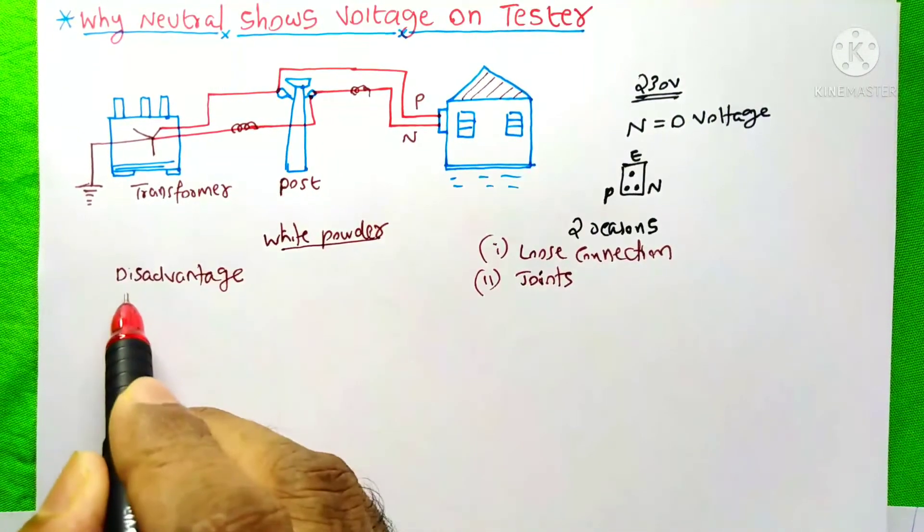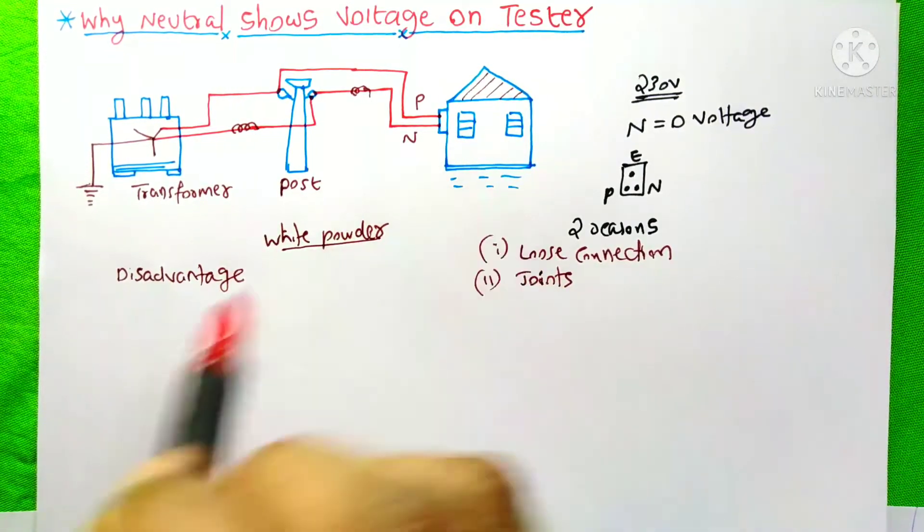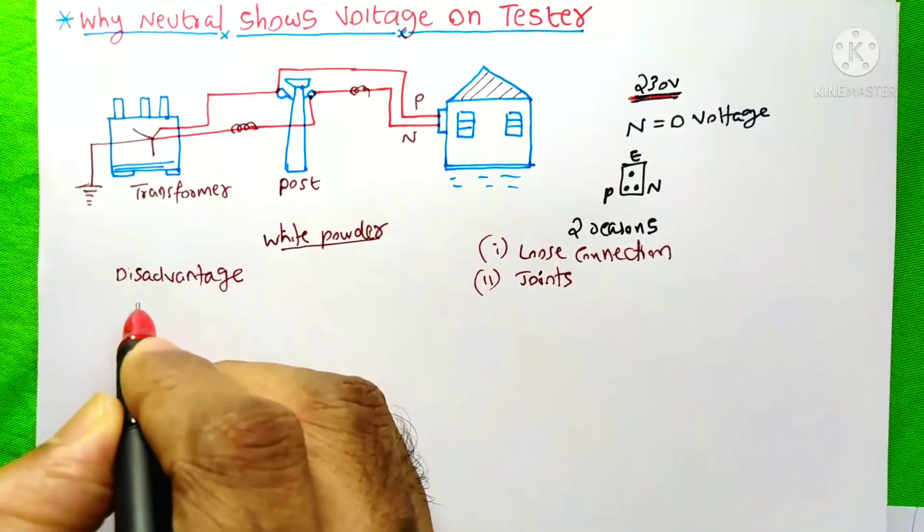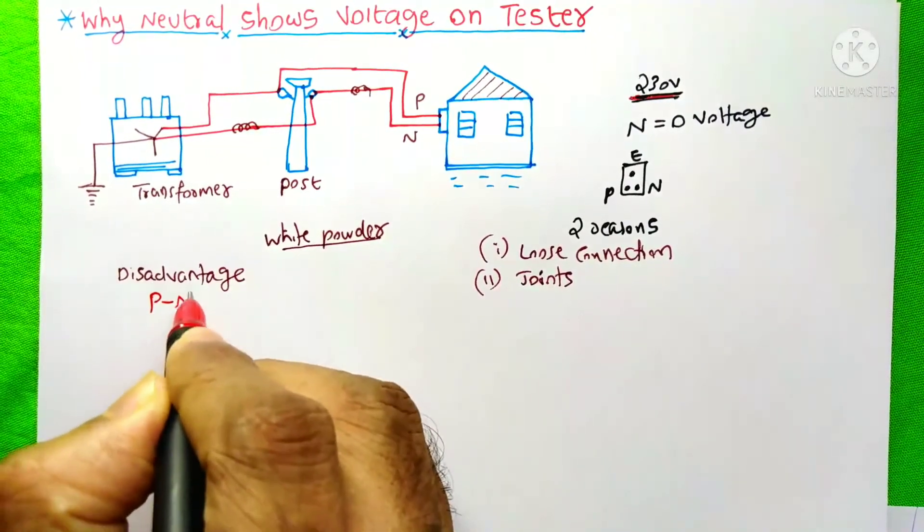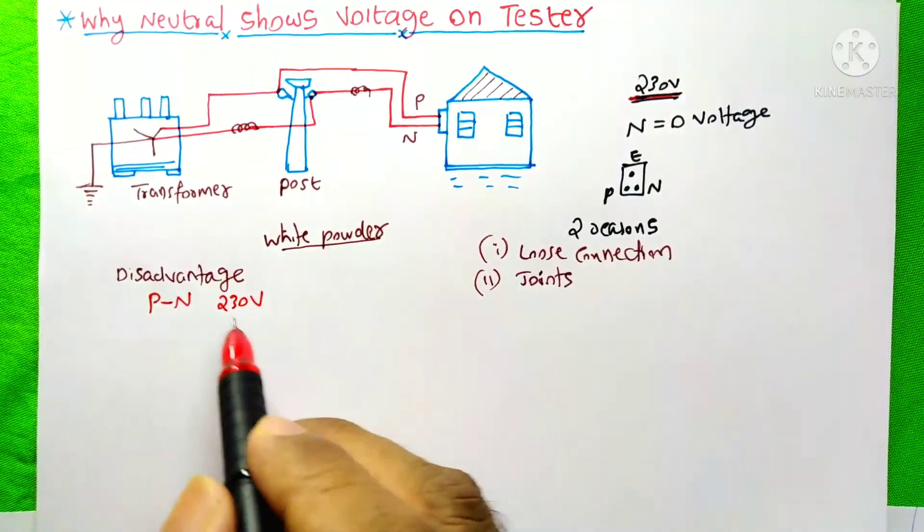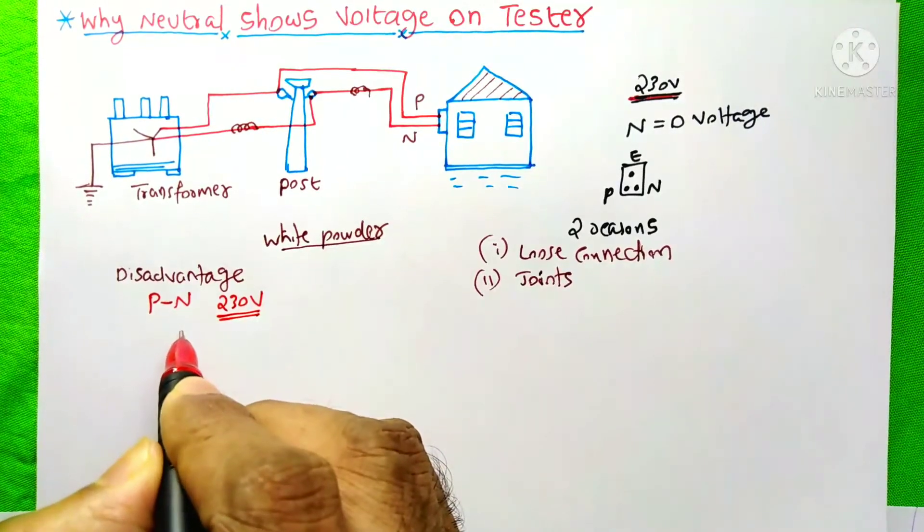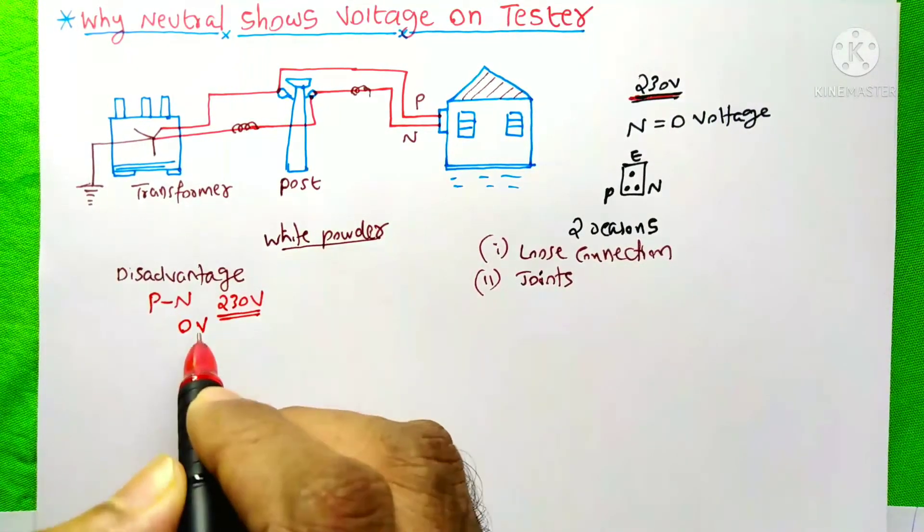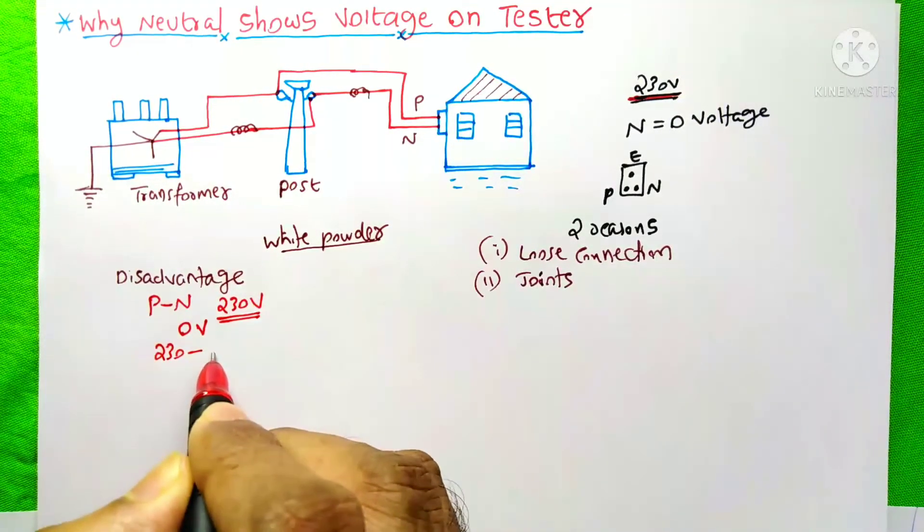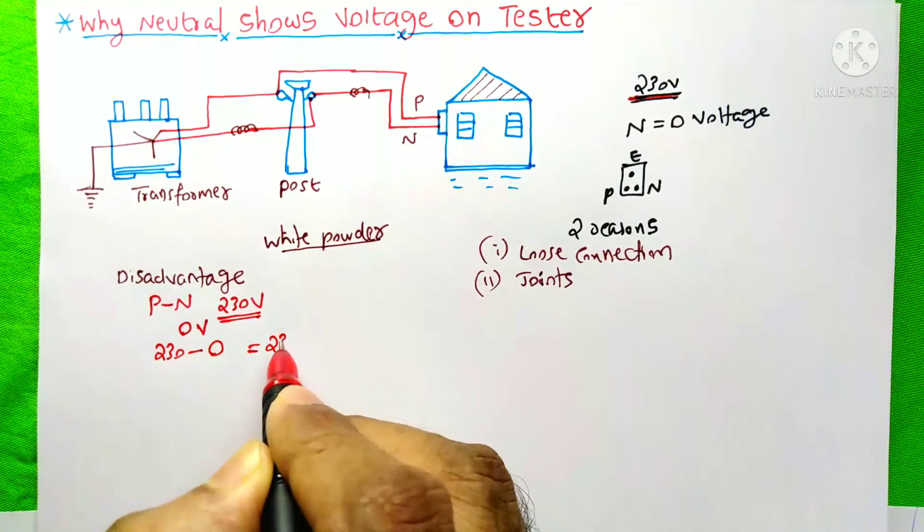You know, the main disadvantage of this problem is your home will not get the proper voltage. Single-phase voltage means the voltage between phase and neutral. It is here 230V. You will get this 230V only if the neutral voltage is 0V. If the single-phase voltage is 230V and the neutral voltage is 0V, then when you subtract this, you will get 230V.